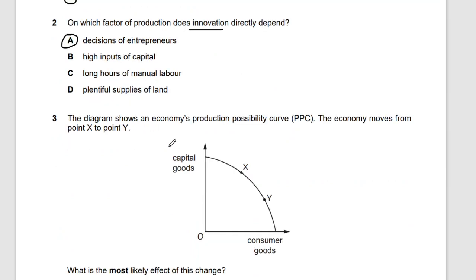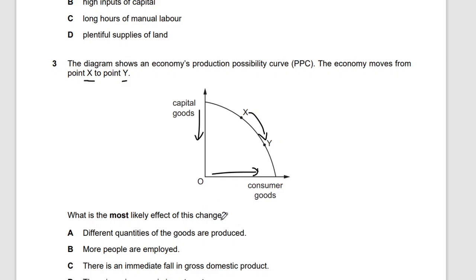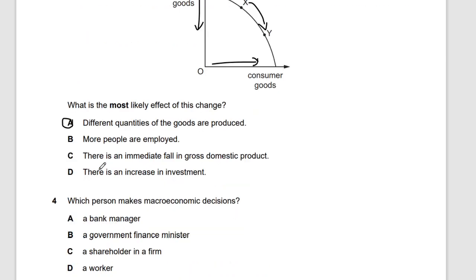Question three: the diagram shows a production possibility curve (PPC). The economy moves from point X to point Y. The PPC shows the maximum of two goods that can be produced — capital goods and consumer goods. Moving from X to Y means capital goods are going down and consumer goods are increasing. The answer is A — different quantities of these goods are produced.